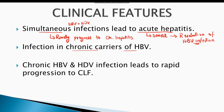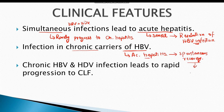Super-infection in chronic carriers of hepatitis B virus causes acute hepatitis, which mostly recovers spontaneously, and there is also cessation of chronic hepatitis B. In certain cases, the patient becomes a chronic carrier of both hepatitis B virus and hepatitis D virus. The chronic infection leads to rapid progression to chronic liver failure and ultimately to liver cirrhosis.